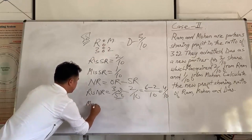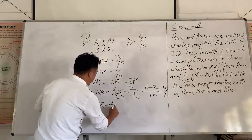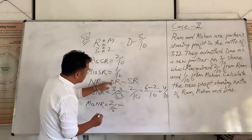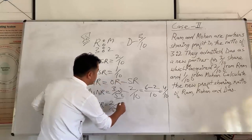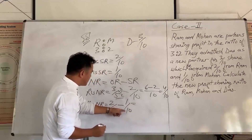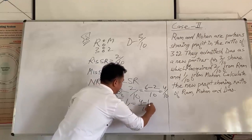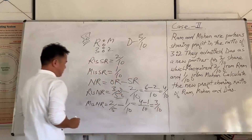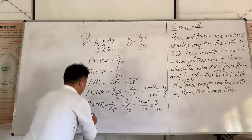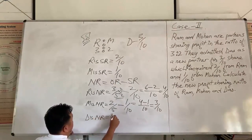Now Mohan's new ratio: Mohan's old ratio is 2 by 5, minus Mohan's sacrifice ratio which is 1 by 10. Making denominators the same: 2 by 5 becomes 4 by 10. So we get 4 minus 1 divided by 10, which is 3 by 10. Das's new ratio is already given in the question as 3 by 10, so we don't need to find it.